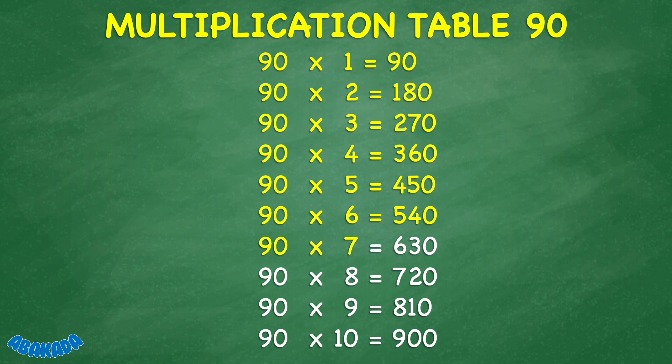90 times 7 equals 630. 90 times 8 equals 720. 90 times 9 equals 810. 90 times 10 equals 900.